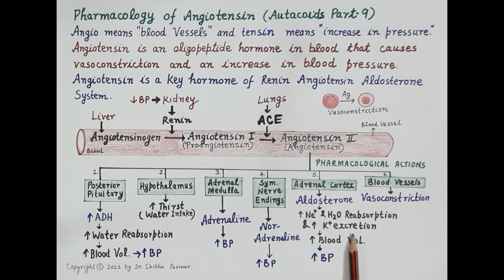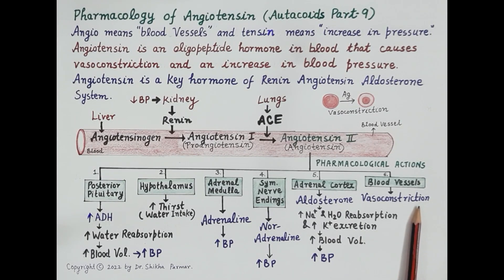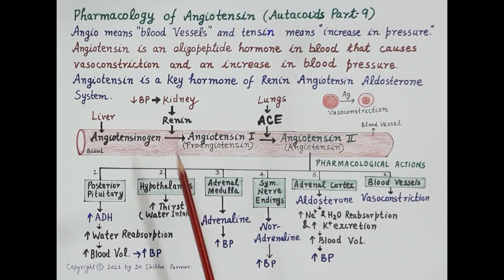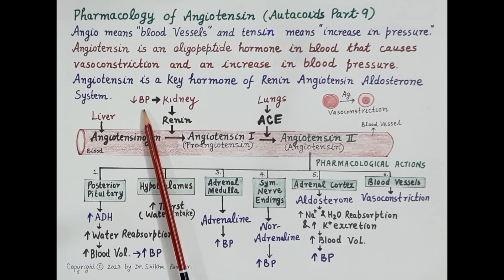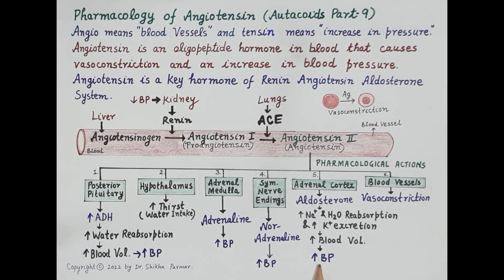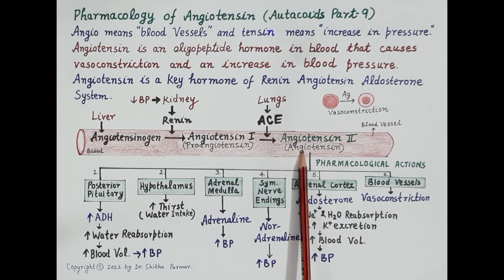Aldosterone also mediates increased excretion of potassium. As a vasoconstrictor, angiotensin 2 reduces the effective diameter of blood vessels, producing a rise in blood pressure. Importantly, excessive or prolonged production of angiotensin 2 can cause hypertension.